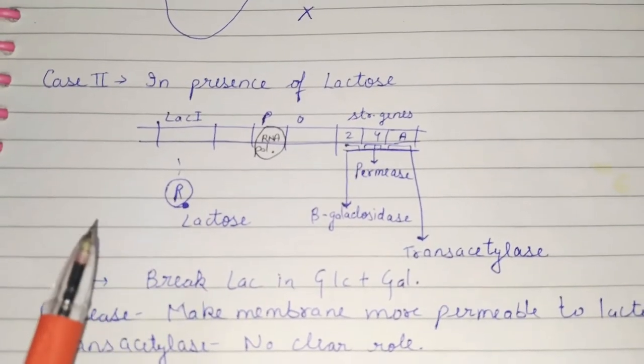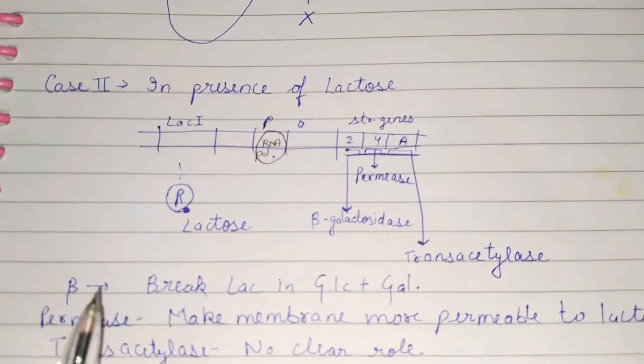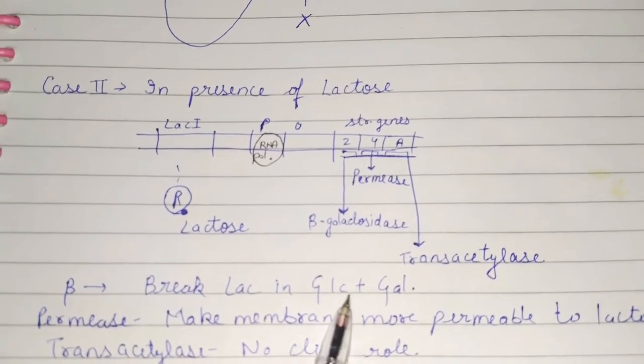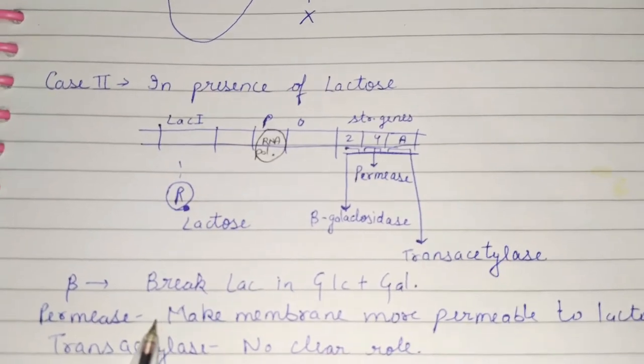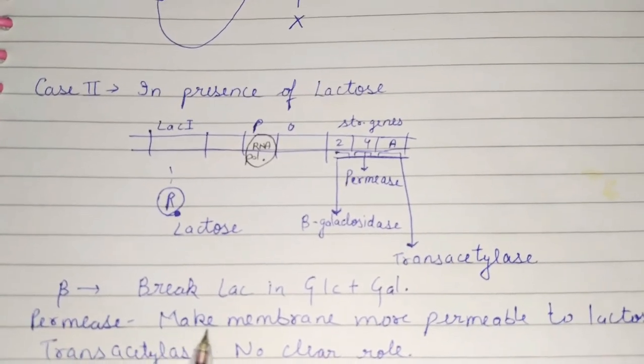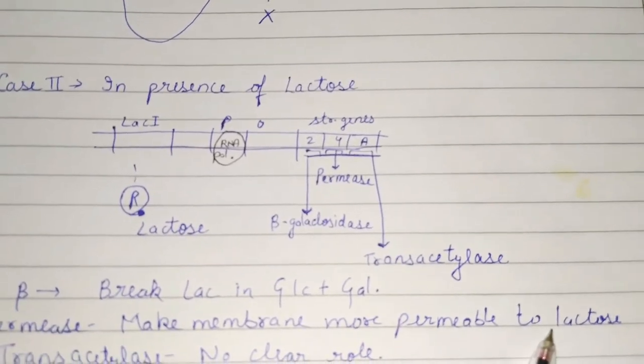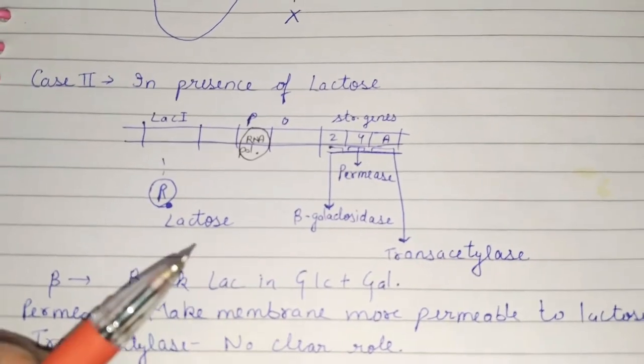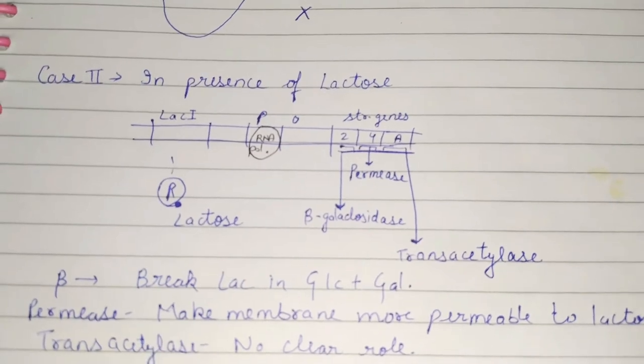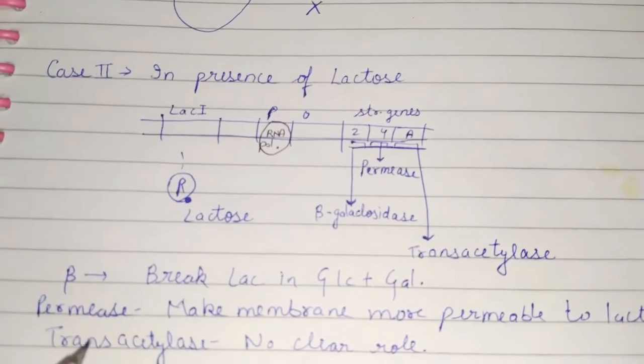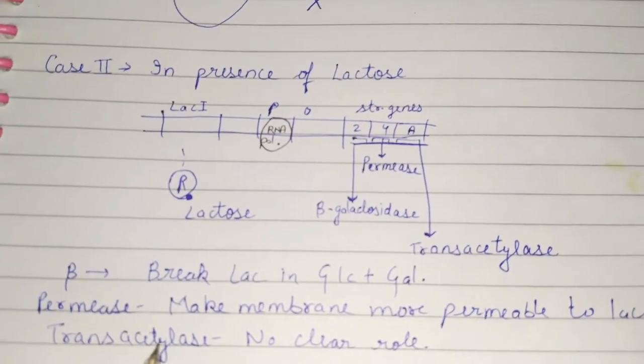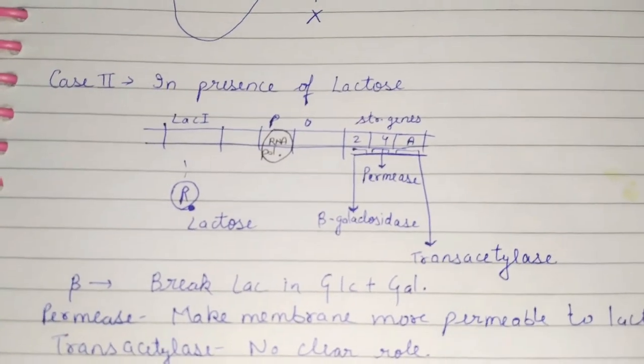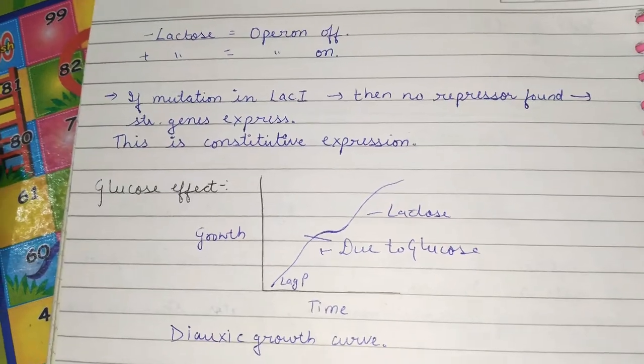Then its function. The main function of beta-galactosidase is to break lactose into glucose and galactose. Permease makes the membrane more permeable to lactose. If the membrane is more permeable, then more lactose will come and it converts into more glucose. Transacetylase function is still not clear.